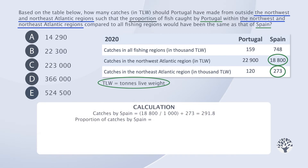The proportion of catches by Spain in the North-West and North-East Atlantic regions compared to all fishing regions is this value divided by the total catch multiplied by 100. This is 291.8 divided by 748 multiplied by 100, which is approximately 39%.